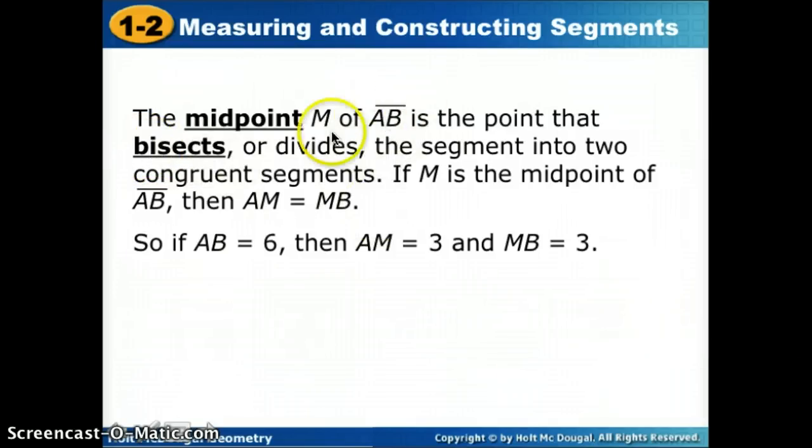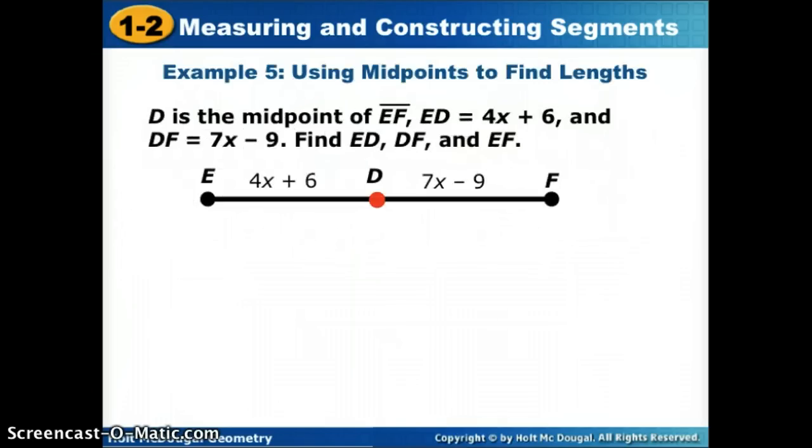If AB, the whole segment, is 6, and M is halfway between, then the first half is 3 and the second half is 3. We can use that same knowledge to solve problems just like we did our other problems. If we have a segment EF and D is its midpoint, we know that this half is equal to this half. So if we wanted to solve for X, we know that one half equals the other half. ED is equal to DF.